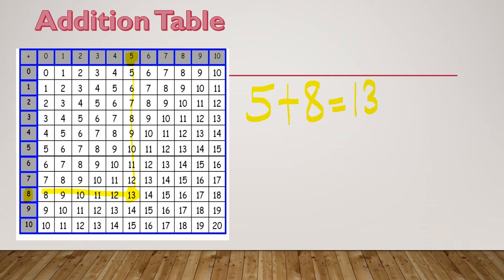Let's try 7 plus 4. I'm gonna take the addend 7 and the addend 4 and I'm going to see where they intersect and it's right here at this square which is 11. So this is how you use an addition table.